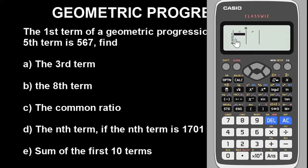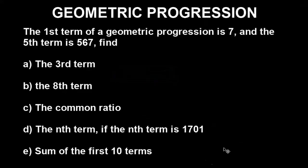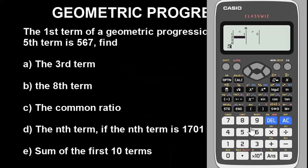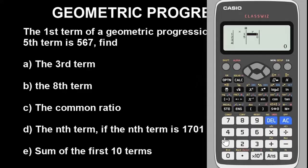Now you need to input the respective values for x and y. The x values will be the term numbers. We have the first term and the fifth term, so enter 1 for x, press Enter, then go down. For the next row enter 5. The y values are the values of the respective terms — for the first term enter 7, and for the fifth term enter 567.